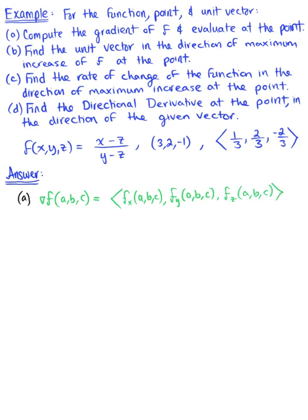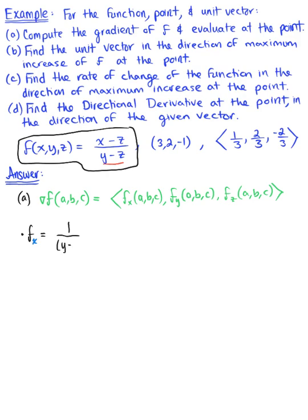So here we go. First things first, using this function here, we want to find the partial derivatives. The partial derivative with respect to x: since we are differentiating with respect to x, we treat y and z like constants. Our whole denominator here is a constant, so all we need to do is use the power rule. We're left with the constant 1 over (y minus z), multiplied by the derivative of x, which is just 1. So the final answer is 1 over (y minus z).